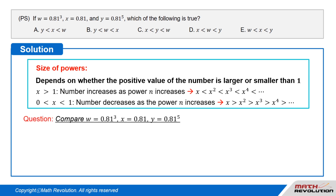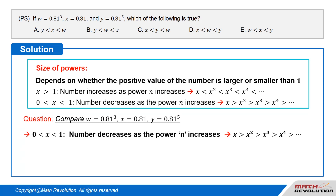We have to compare W equals 0.81 cubed, X equals 0.81, and Y equals 0.81 to the power of 5. This type of question appears frequently. Depending on where the number is from 1, the direction of the inequality sign would change.